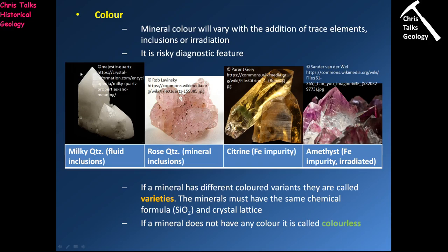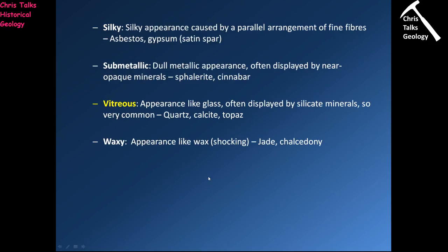Even though light can't pass through milky quartz, the light bouncing off its surface will still look like frosted glass essentially. There are many minerals that are not transparent — light won't pass through them — but they will have this appearance where the light bouncing off the surface makes them look like a block of glass.